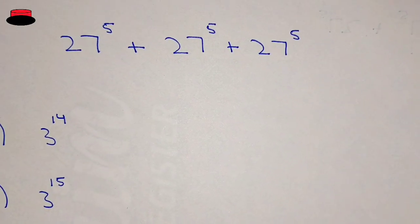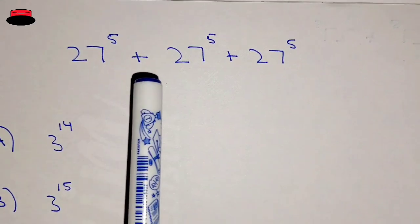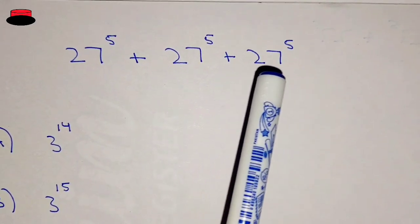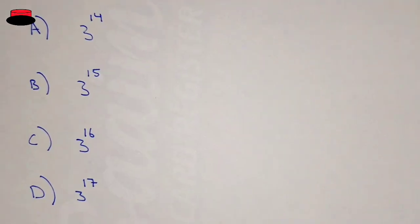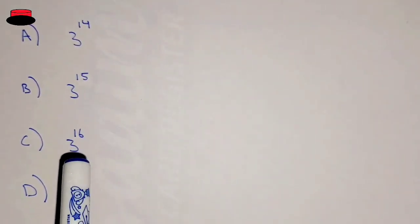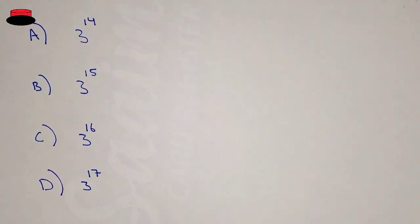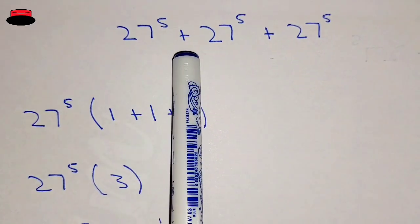Hello, what's up guys, welcome to the new video. In this video, we have the question: 27^5 + 27^5 + 27^5. Here we have four options: 3^14, 3^15, 3^16, and 3^17. So what will be the right answer?